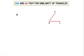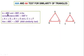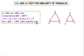Now observe these two figures of triangles ABC and DEF for the similarity test. In triangle ABC and triangle DEF, in the correspondence ABC to DEF, if angle A is congruent to angle D, angle B is congruent to angle E, and angle C is congruent to angle F, then triangle ABC is similar to triangle DEF by the Angle-Angle-Angle (AAA) similarity test.